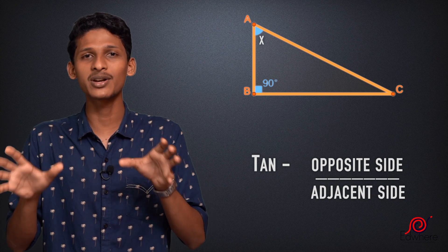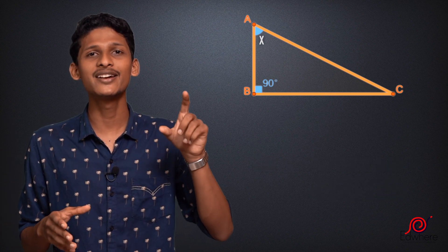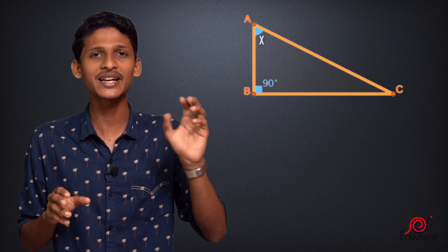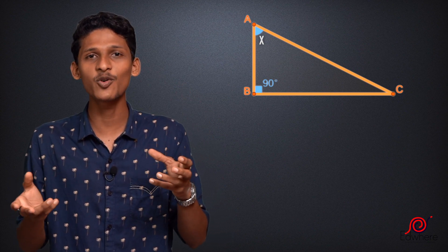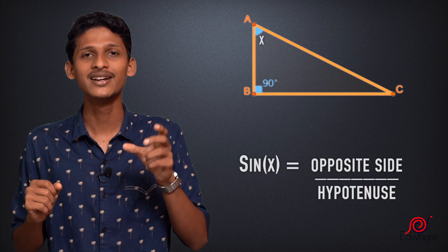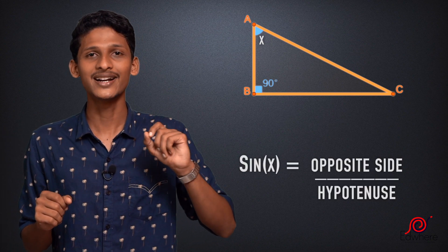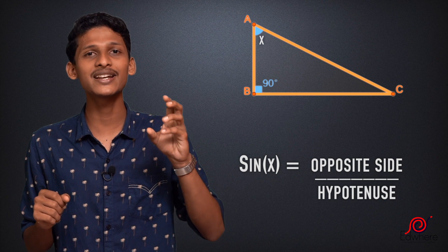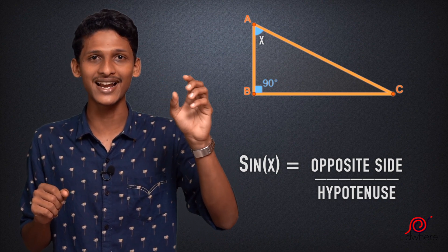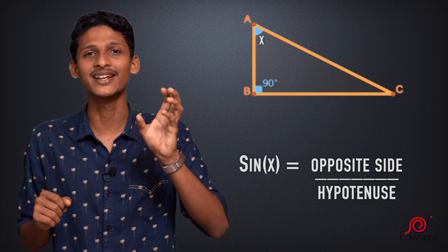Now, let's apply this formula. We have a triangle ABC. This triangle has angle xn. We have already said sin is opposite side by hypotenuse. What is the hypotenuse? It is AC. What is the opposite side? This angle's opposite side is BC.